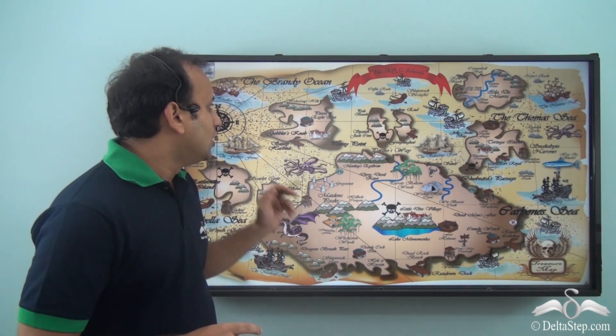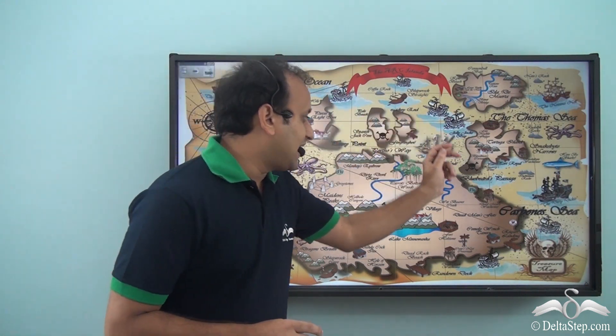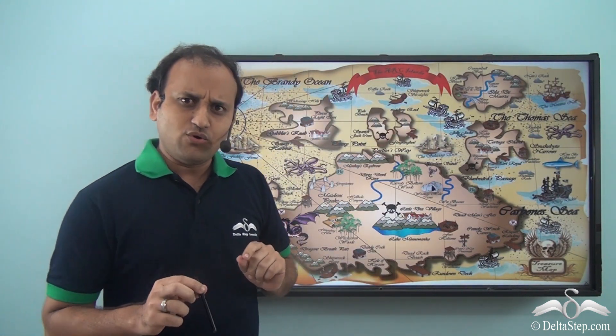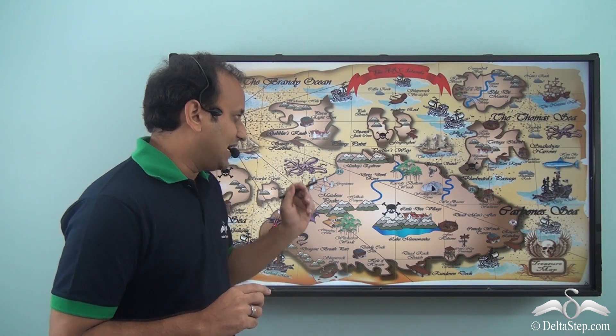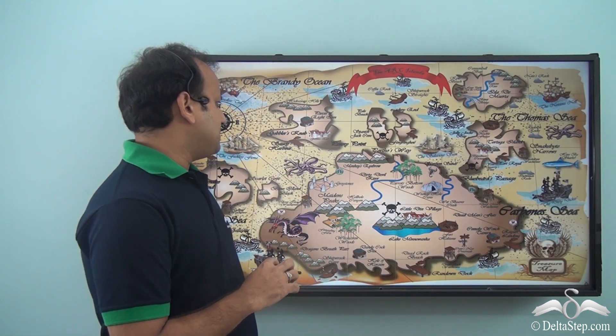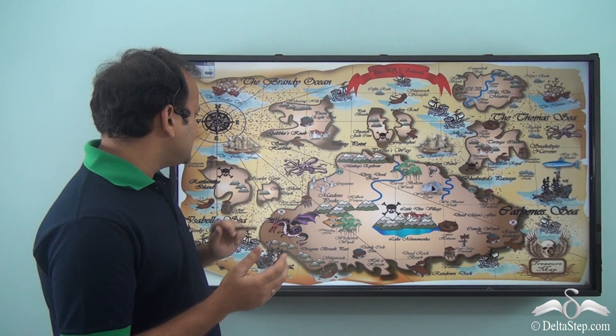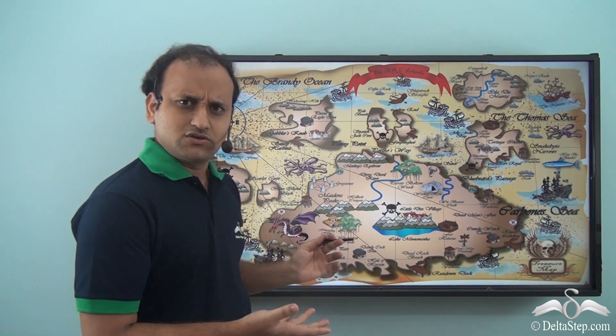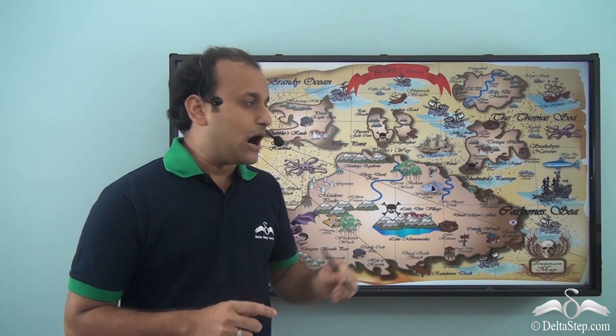That piece of paper looked something like this. Jack was very excited to get it because it could give him the location of a treasure, but this piece of paper is actually a set of images — a collection of images. How could this help Jack locate the bigger treasure? Well, Jack was very confused.